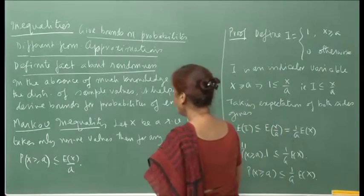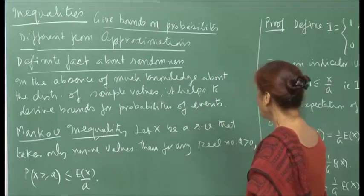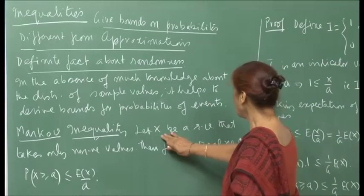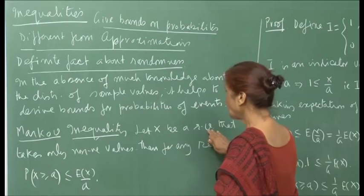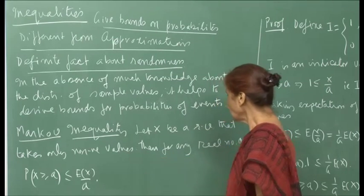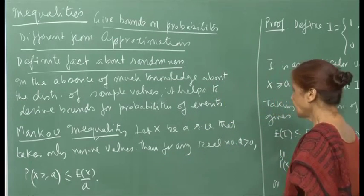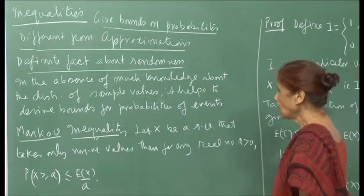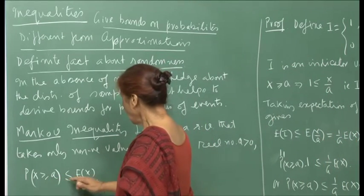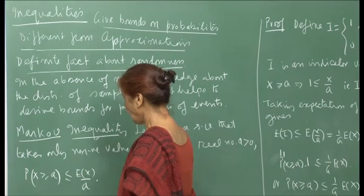The first simple one is the Markov inequality. The statement is that if x is a random variable that takes only non-negative values, then for any real number a greater than 0, the probability that x is greater than or equal to a is less than or equal to the expected value of x divided by a.